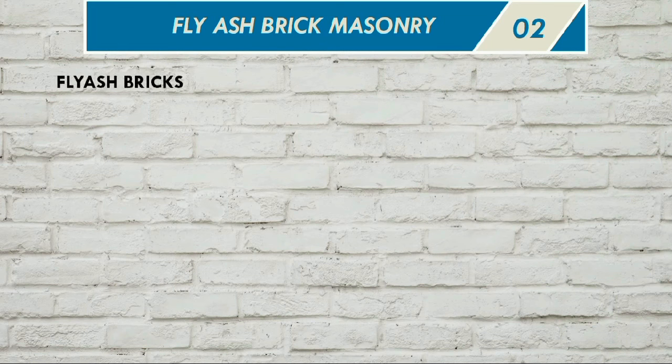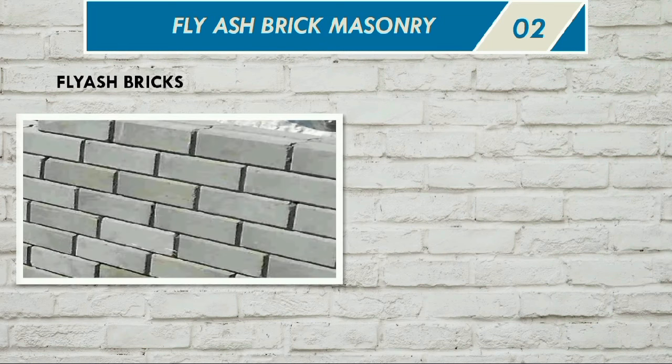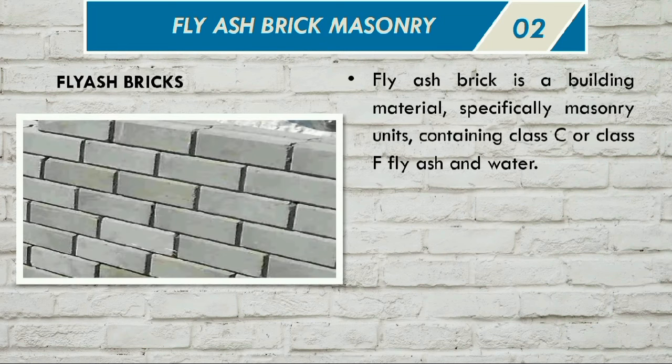Now, fly ash brick masonry. This is one type of building material used in masonry construction. In this case, fly ash and water are used as the main ingredients.